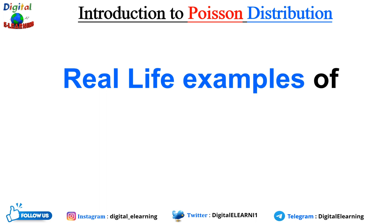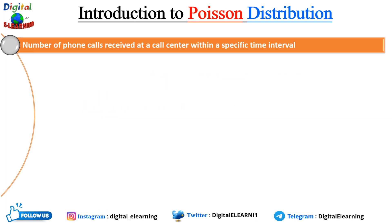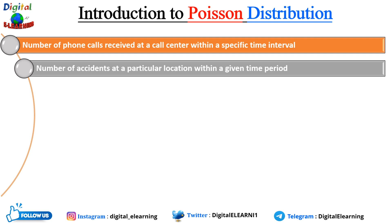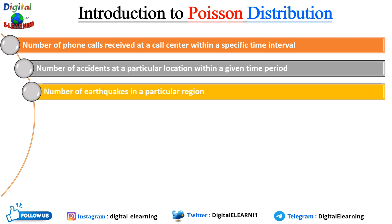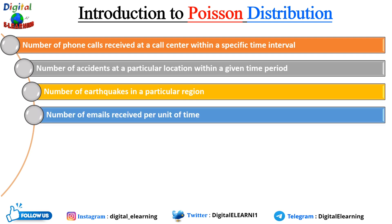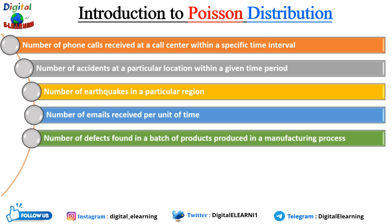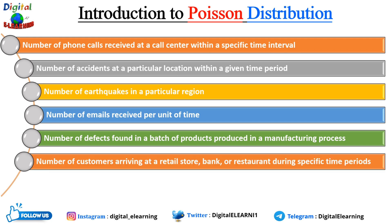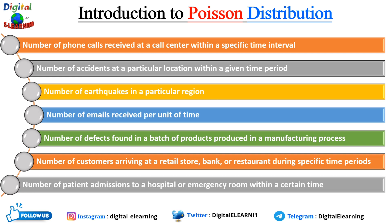Some real-life examples of the Poisson distribution include: the number of phone calls received at a call center within a specified time interval; the number of accidents at a particular location within a given time period; the number of earthquakes in a particular region; the number of emails received per unit of time; the number of defects found in a batch of products in manufacturing; the number of customers arriving at a retail store, bank, or restaurant; and the number of patients admitted to a hospital or emergency room within a certain time period.